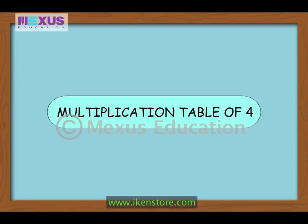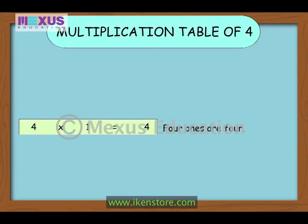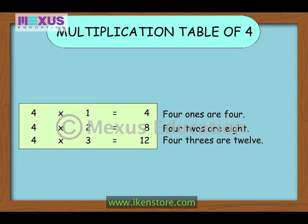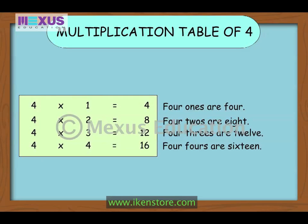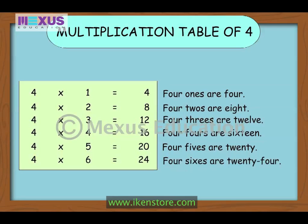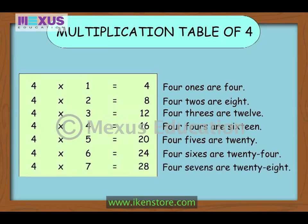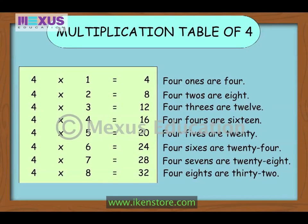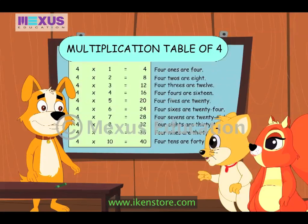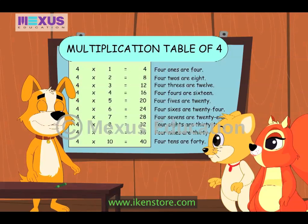Let's learn the multiplication table for the number 4. 4-1s are 4, 4-2s are 8, 4-3s are 12, 4-4s are 16, 4-5s are 20, 4-6s are 24, 4-7s are 28, 4-8s are 32, 4-9s are 36, 4-10s are 40. The numbers are getting bigger and bigger. Don't worry, you'll get used to it soon.